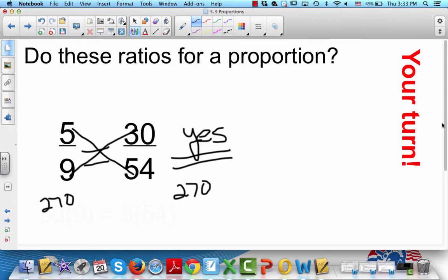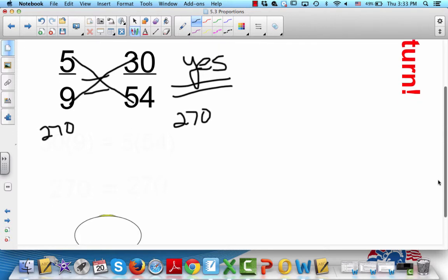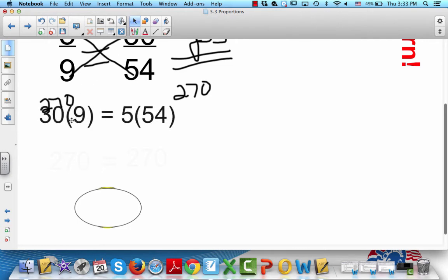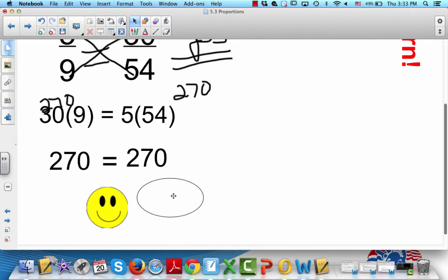Oh, I messed up. Look here. I was supposed to do this. I don't want you to lose this. So let's see: 30 times 9 equals 5 times 54. 270 equals 270. Is it a proportion? Yes, it is. Almost messed up and you didn't get to see that.